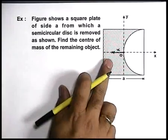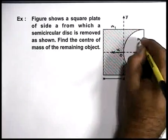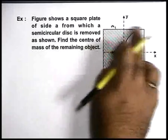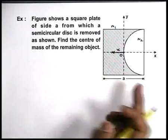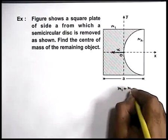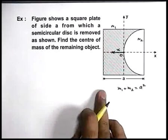Now in this situation, first let us consider the masses m1 and m2 for the two parts of the plate, where m1 plus m2 is the total mass of the plate, which is proportional to its total area. So here we can write, m1 plus m2 is equal to a², which is the area of this square plate.